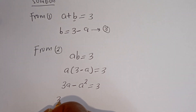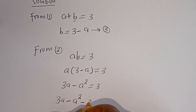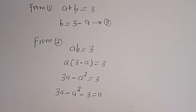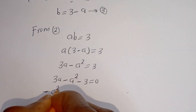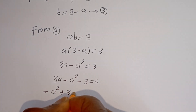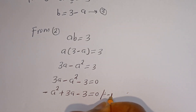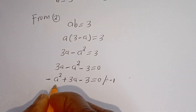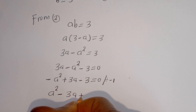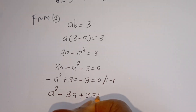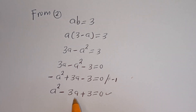Then we have 3A minus A squared equals 3. Subtracting 3 from both sides: 3A minus A squared minus 3 is equal to 0. Now let's put this in standard form. Dividing all through by minus 1, we get A squared minus 3A plus 3 is equal to 0. Now this is a quadratic equation.